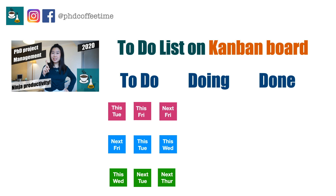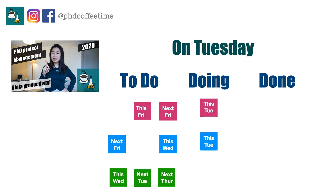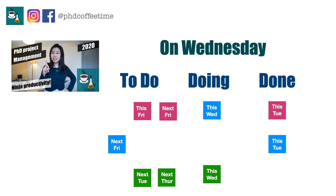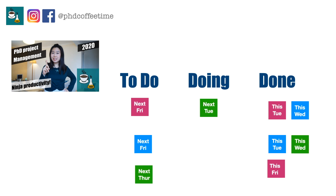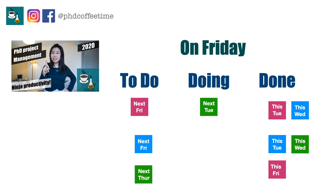Here's an example: on the Kanban board, you have items listed for this week and next week to be due. Every day you show up to work and move the posted sticker from the to-do column to the doing column. By the end of the week, you should be finishing these tiny micro deadlines that will help you meet the larger deadlines for your advisor and your own project.